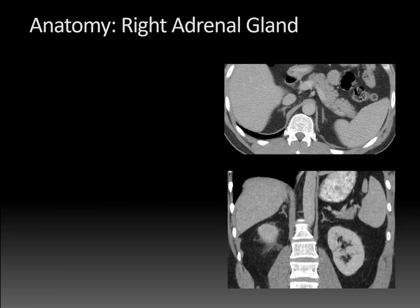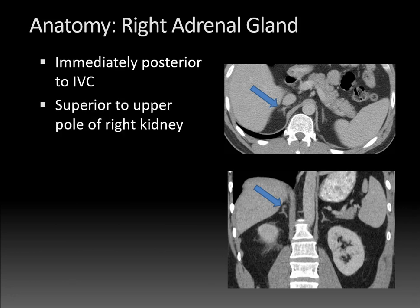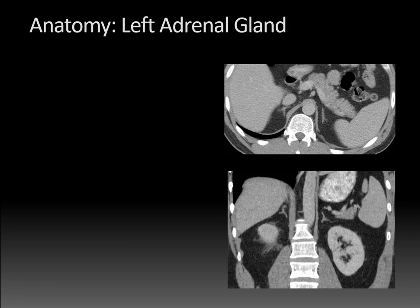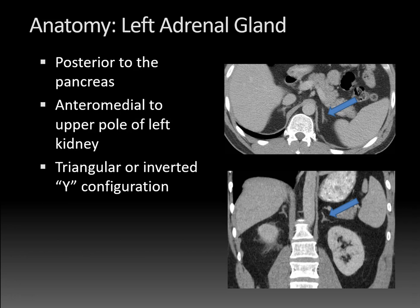Starting with anatomy of the right adrenal gland: the gland is immediately posterior to the inferior vena cava, superior to the upper pole of the right kidney, and tends to have an inverted V configuration or even a comma shape. The left adrenal gland is posterior to the pancreas, intermedial to the upper pole of the left kidney, and more likely to have a triangular or inverted Y configuration. On the coronal reformatted image, both adrenal glands tend to have a lamdoid configuration.